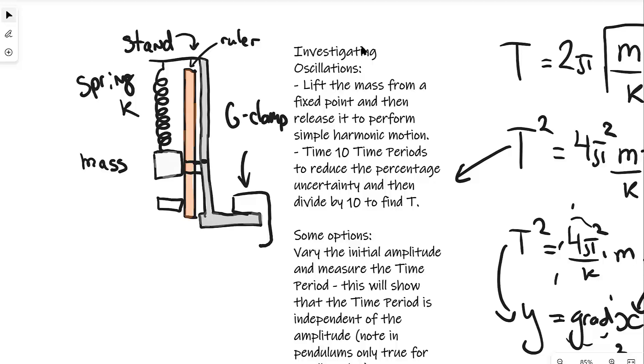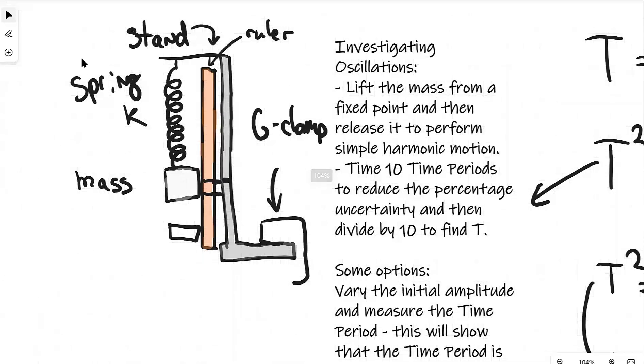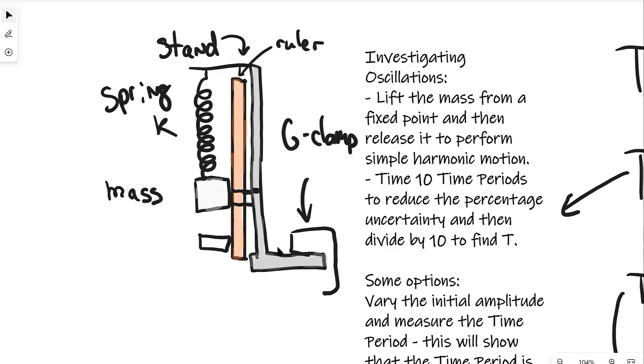Let's revise oscillations experiments. We're going to start off with a setup that will allow us to investigate simple harmonic motion in springs. First of all we have a stand that's been attached with a g-clamp to a desk. We have a spring of spring constant k, we have a mass m, and we have a ruler behind it that will serve as a marker.